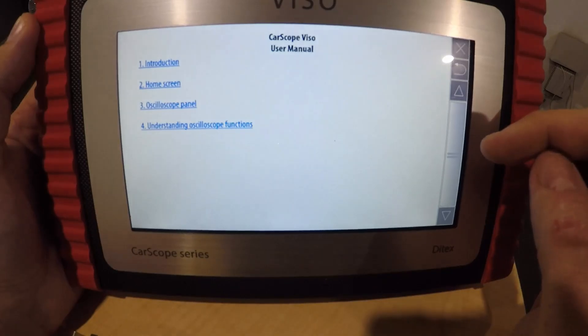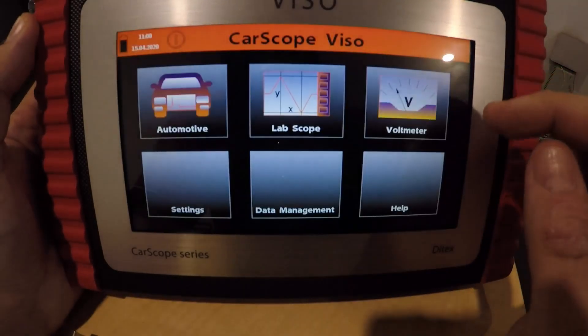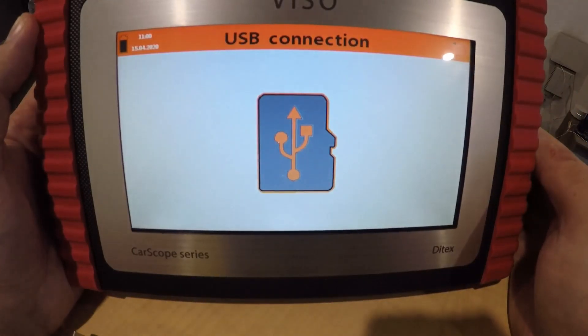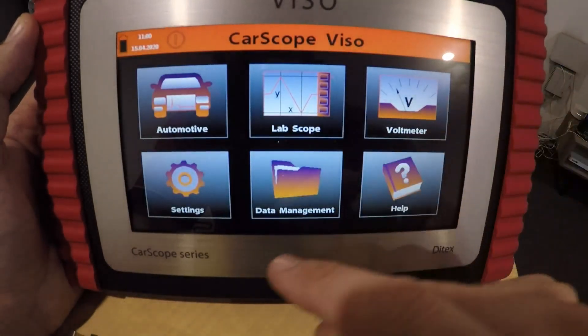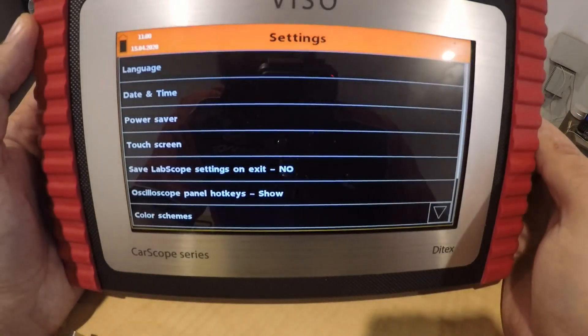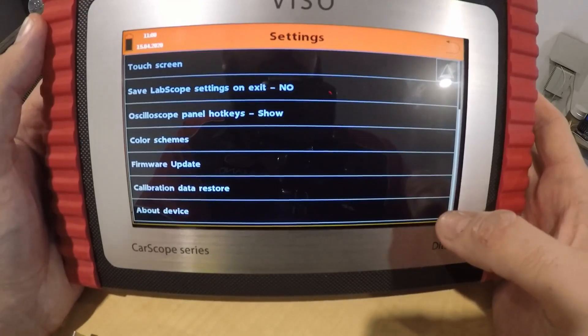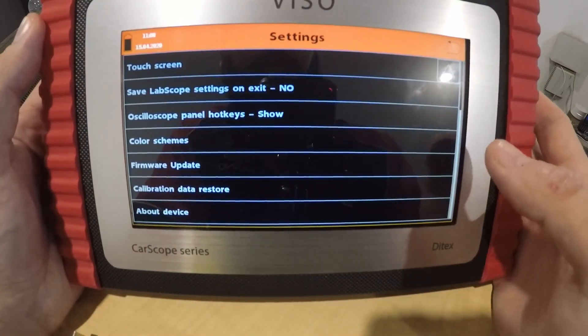So we'll just get out of that. What else is in there? Not really much. Data management, this is obviously where you connect it to the actual PC. Settings, it's just got your normal settings. Nothing really abnormal there that you really need to show.